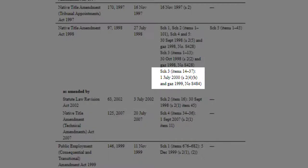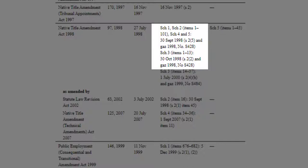For example, Schedule 3, Items 14 to 37, did not commence until 1 July 2000, with all other schedules and items commencing in 1998.